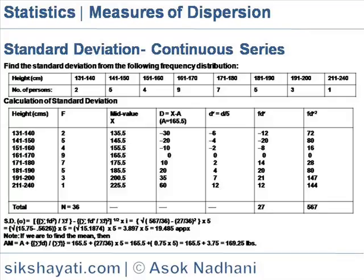If you are to find the mean, then mean M is equal to A plus sigma FD by sigma F, which equals 165.5 plus (27 by 36) into 5, equals 165.5 plus 0.75 into 5, equals 165.5 plus 3.75, equals 169.25.